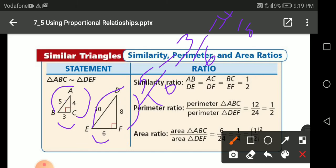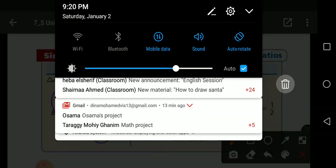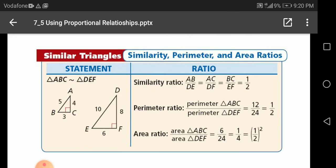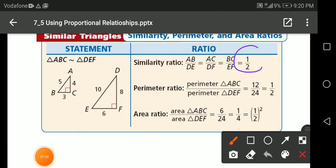So if you simplify every one here, you got here half. 5 over 10, 5 divided 5 is 1, 10 divided 5 equals 2. 3 over 6, the same half. And 4 over 8, the same half. So all the ratios here, we got here half.